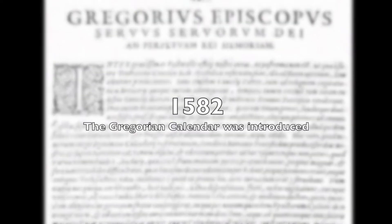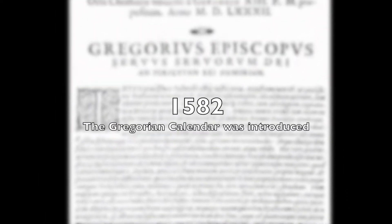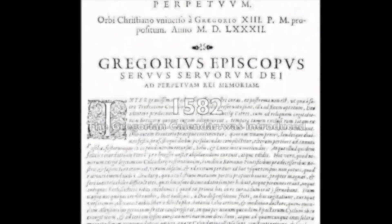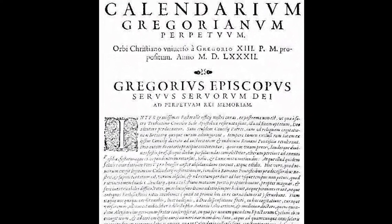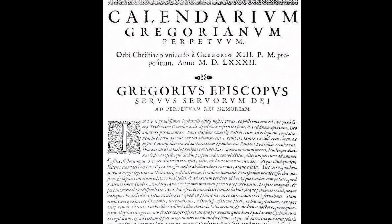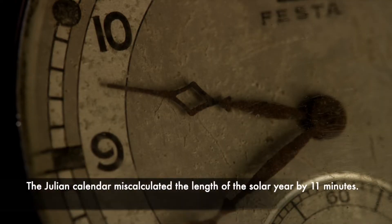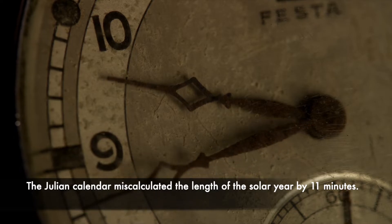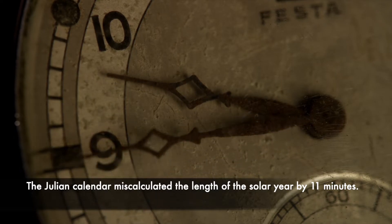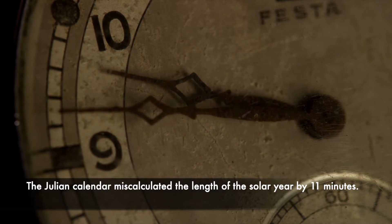In 1582, the Gregorian calendar was introduced by Pope Gregory the 13th. The Julian calendar that was used before the Gregorian one miscalculated the length of the solar year by 11 minutes.